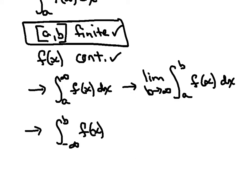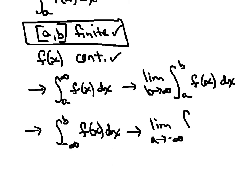The second example is where the integral starts at negative infinity and goes up to b. We rewrite that in terms of a limit: the limit as a approaches negative infinity of the integral from a to b of f(x) dx. Same process — find the antiderivative, plug the bounds in, and evaluate the limit.